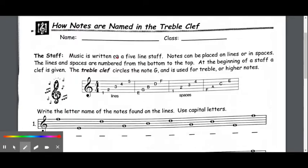The staff: music is written on a five-line staff. Notes can be placed on lines or in spaces. The lines and spaces are numbered from the bottom to the top. At the beginning of a staff a clef is given. The treble clef circles the note G and is used for treble or higher notes. So this is our treble clef and if you look carefully it circles the note G on the staff and our G is our second line note right there.